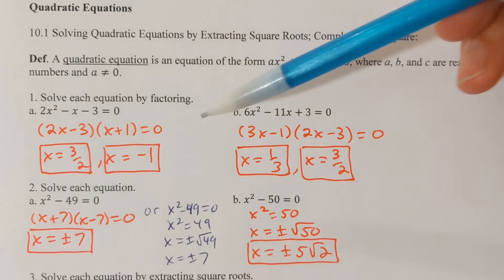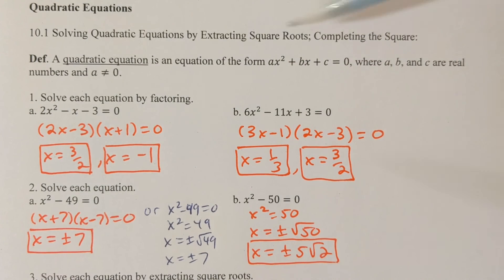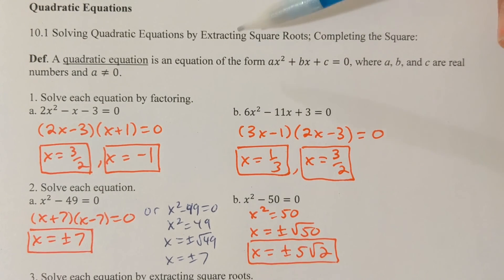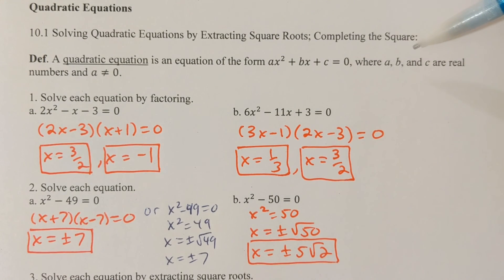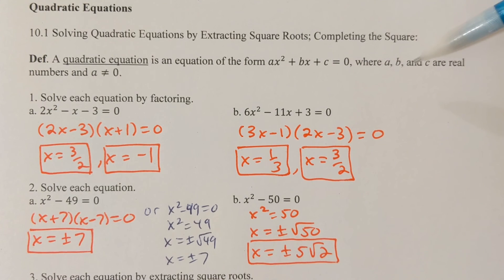They are factoring, using the square root property — or extracting the square roots, that means the same thing — and then completing the square is the third method, and then the fourth method we'll learn in the next section.